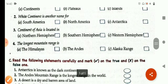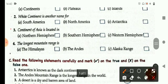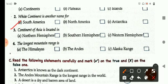Question number three, continent of Asia is located in and your options are Northern Hemisphere, Southern Hemisphere, Western Hemisphere and the right answer is Northern Hemisphere.